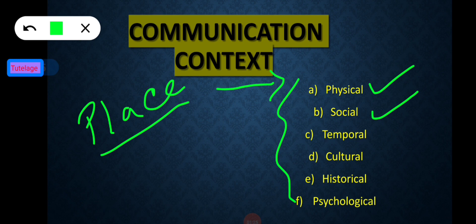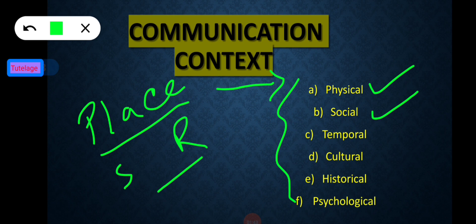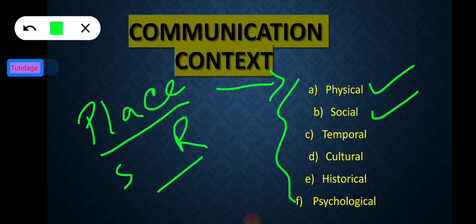The second dimension is social context. Social context is based on different factors such as the relation between sender and receiver, their role, their status, their views, and the norms of society. For example, the interaction between a father and daughter is different from the interaction between an employee and his boss, because their social relationships and roles are totally different.